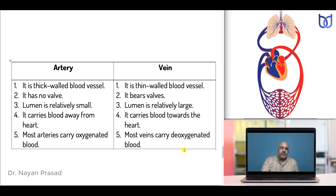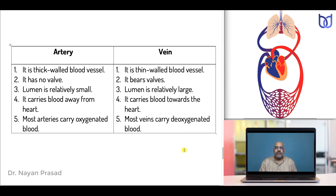Differences between artery and vein: Arteries are thick-walled blood vessels while veins are thin-walled. Arteries have no valve; veins bear valves. The lumen in an artery is relatively small while in a vein it is relatively large. Arteries carry blood away from the heart while veins carry blood towards the heart. Most arteries carry oxygenated blood while most veins carry deoxygenated blood.